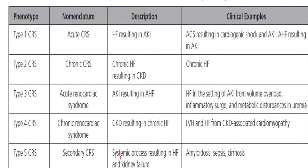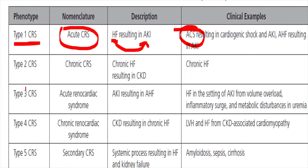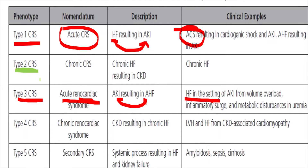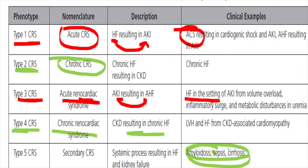Putting it all together in a table: Type 1 is acute cardio-renal syndrome — heart failure resulting in AKI, with MI or acute LVF as typical examples. Type 3 is acute renal-cardiac syndrome — AKI resulting in acute congestive cardiac failure due to volume overload or other reasons. Type 2 is chronic cardio-renal syndrome; Type 4 is chronic renal-cardiac syndrome, where CKD results in chronic heart failure. Type 5 involves systemic causes leading to involvement of both the kidney and heart.